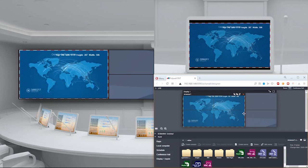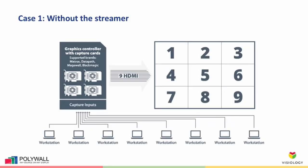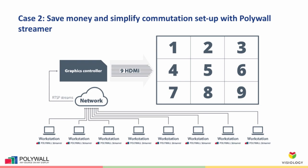The following two schemes illustrate the benefits of the Streamer. Without PolyWall Streamer, the controller requires expensive capture cards to display real-time video feed on a video wall from workstations. Additional expenses include splitters for PC and commutation such as HDMI and DVI cables. PolyWall Streamer helps save money as a software solution — a cost-effective alternative that removes the cost of capture cards and commutation, frees space in the controller, and provides an opportunity to display content from remote PCs on a video wall in high quality and with low latency.